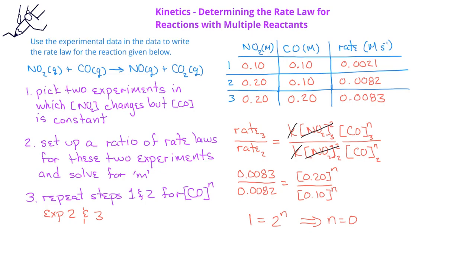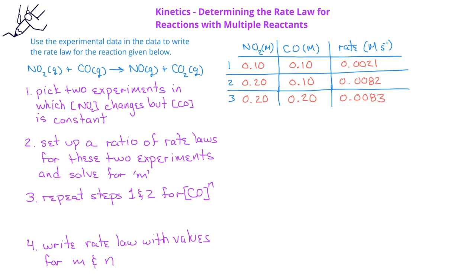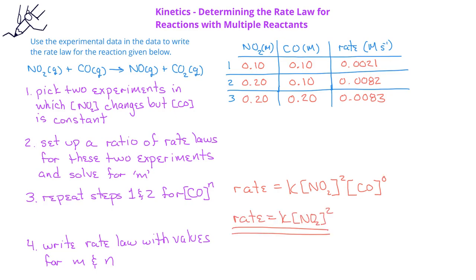Next, we'll write the rate law with the values for m and n. When we do this, we see that the rate law is rate equals K times the concentration of NO2 to the second power times the concentration of CO to the zero power, or more simply, the rate equals K times the concentration of NO2 to the second power.